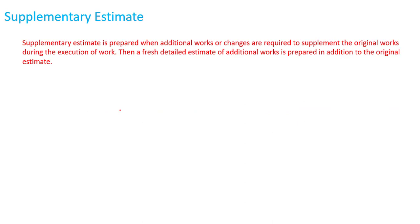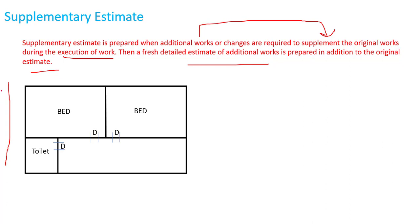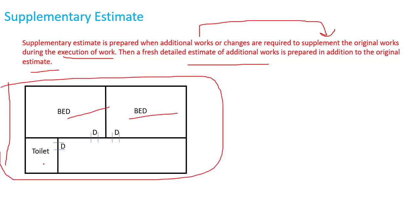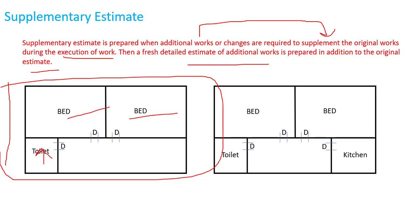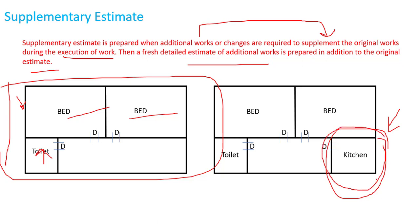The next estimate is the Supplementary Estimate. It is prepared when additional work or changes are required to supplement the original work during execution. A fresh detailed estimate of the additional work is prepared in addition to the original estimate. For example, suppose we have a plan with two bedrooms and one toilet, and during execution the client wants to add a kitchen. We had already created the original item rate estimate, and now we need to find out the estimate for the kitchen as well and resubmit it for sanction.